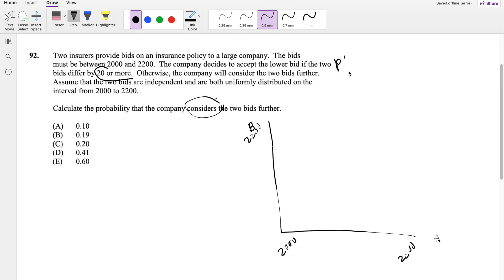So basically, what is the probability that company A and B, the difference between them is less than 20?